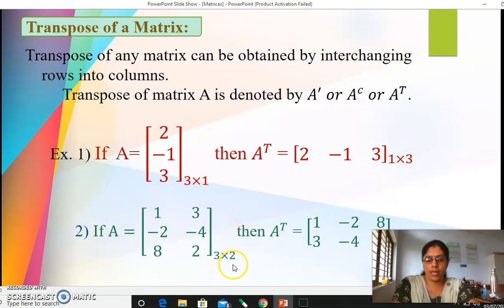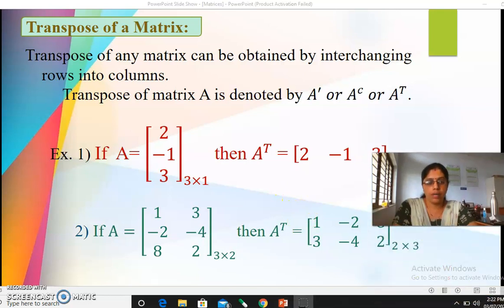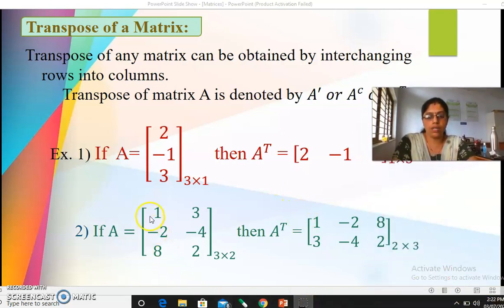Next see one more example of rectangular matrix. It's a matrix of order three by two, three rows two columns. So when you want to write its transpose you again have to interchange rows into columns. First row becomes first column, second row becomes second column, and third row you have to write into third column.